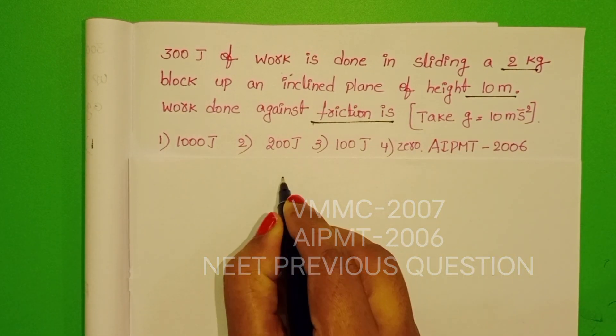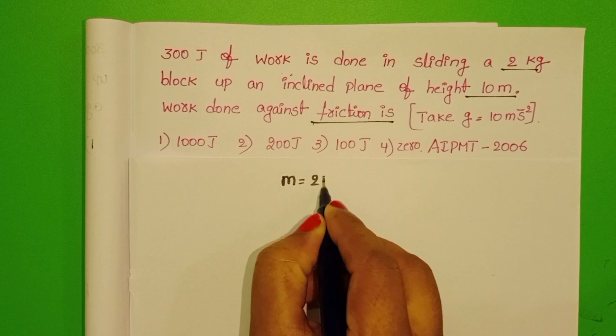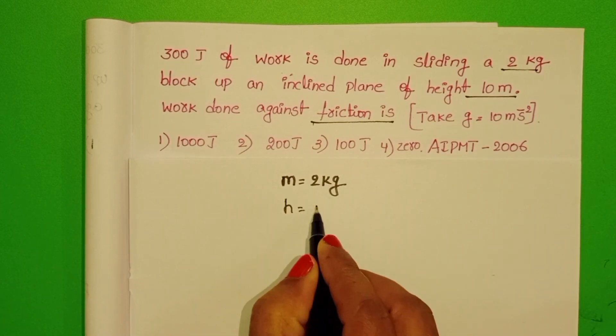In the given question, mass of the block is 2 kg. Height of the inclined plane is 10 meters.